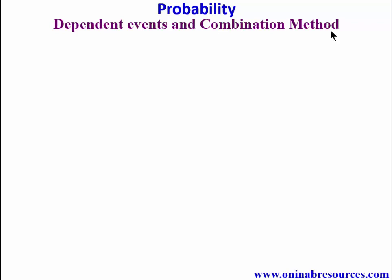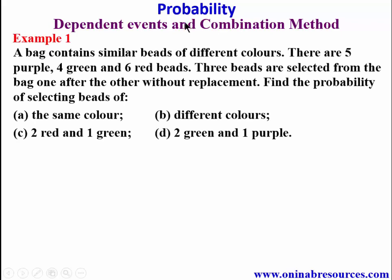Check the description section of this video to get the link to the playlist containing all the videos on probability. We start with example one: a bag contains similar beads of different colors — five purple, four green, and six red beads. Three beads are selected one after the other without replacement. Find the probability of selecting beads of: a) the same color, b) different colors, c) two red and one green, and d) two green and one purple.